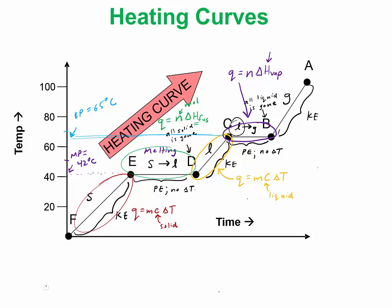The last thing here is for A to B. If you were doing a problem, again, there's a delta T, just like from C to D and E to F. You could use the heat equation for this portion. Just make sure that the C value you use is for the gas form of the substance.